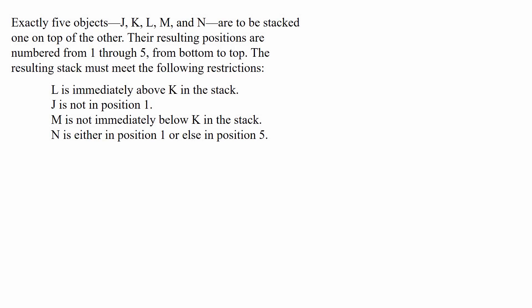Let's take a look at an ordering setup together. We'll start by examining the introductory passage, which will help us understand what we're being asked to do. We're told that exactly five objects — J, K, L, M, and N — are to be stacked one on top of the other. Their resulting positions are numbered from one through five from bottom to top, and the resulting stack must meet the following restrictions.